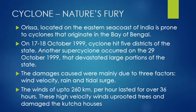Let's discuss something about cyclones — that is natural beauty. Odisha, located on the eastern seacoast of India, is prone to cyclones that originate in the Bay of Bengal. On 17 and 18 October 1999, a cyclone hit five districts of the state. Another super cyclone occurred on 29th October 1999 that devastated larger portions of the state.